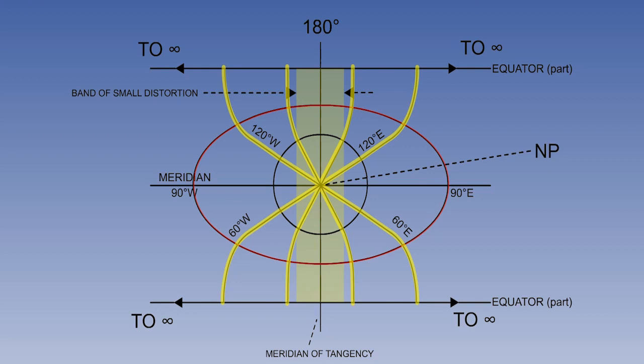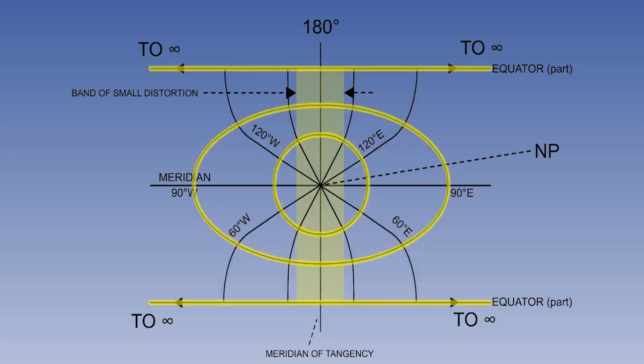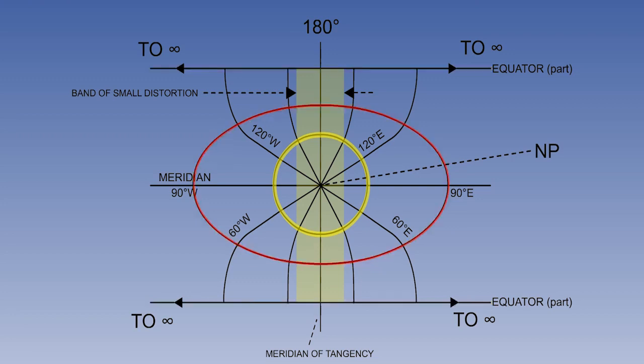So that's the meridians dealt with. What about the parallels? We have already discussed this when dealing with how the projection is produced. We decided that parallels of latitude are ellipses, very close to circular near the poles with the degree of ellipticity increasing as we move away from the pole. At the equator the ellipses have become straight lines.